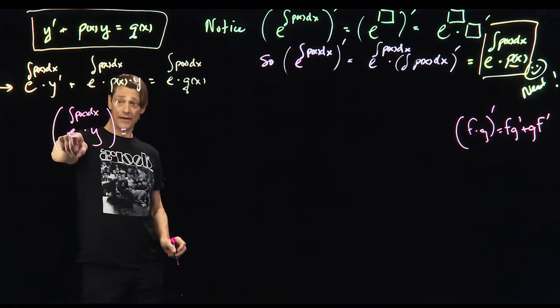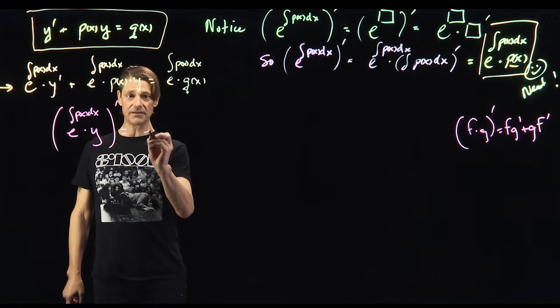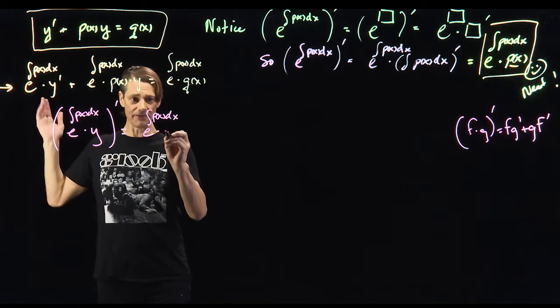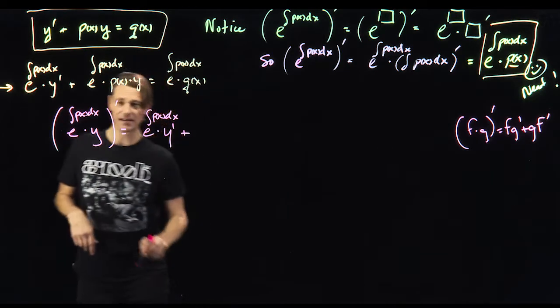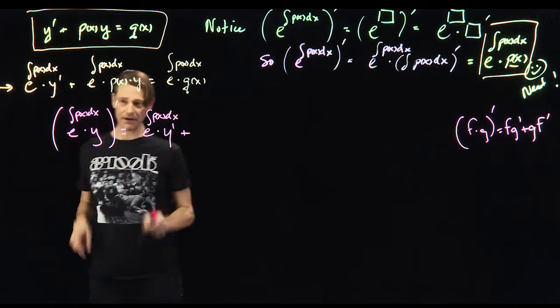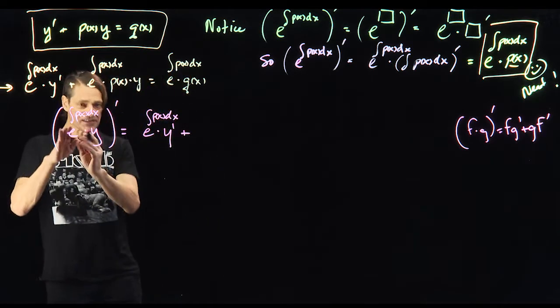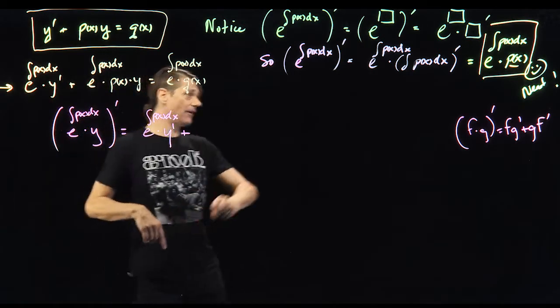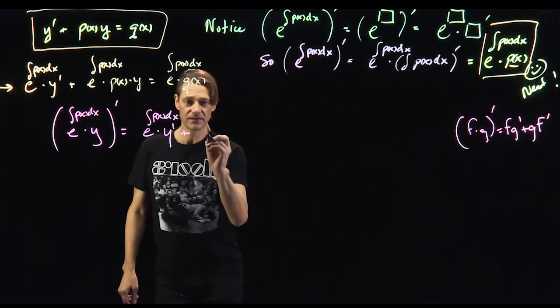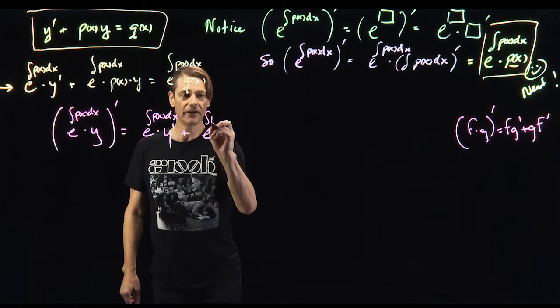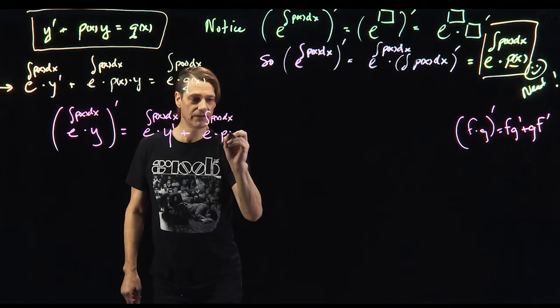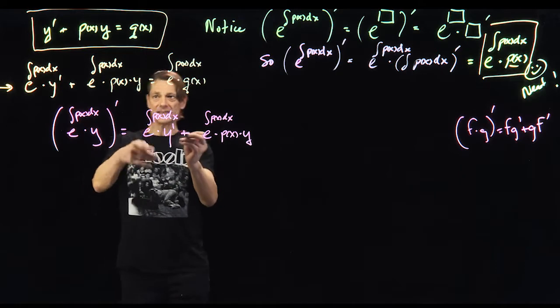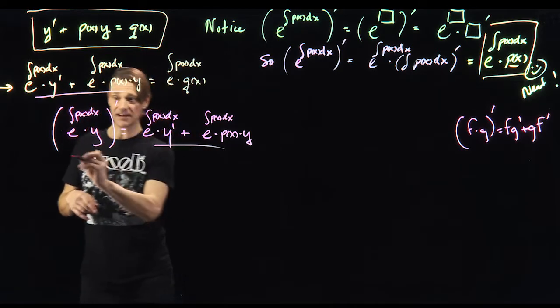Well, it's going to be this times the derivative of this. So it's going to be this, p of x dx times the derivative of y. Derivative of y is just y prime, plus y times the derivative of this. Now I'm going to put the derivative of this up first. Remember the derivative, so it's y times the derivative of this. The derivative of this was given by this. So this is e to the antiderivative of p of x dx times p of x times y. And what that means is this is this is this.